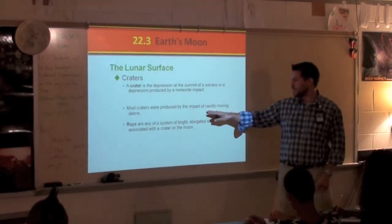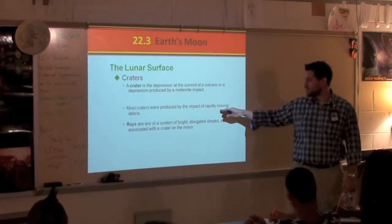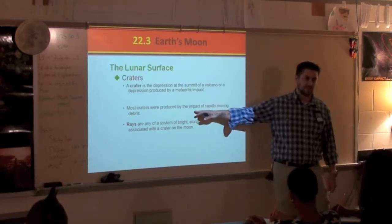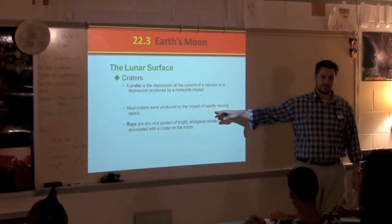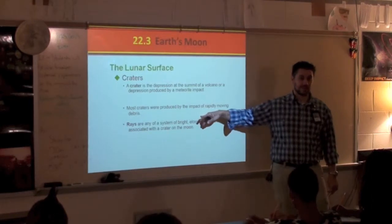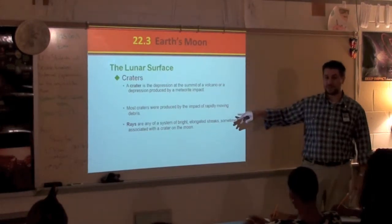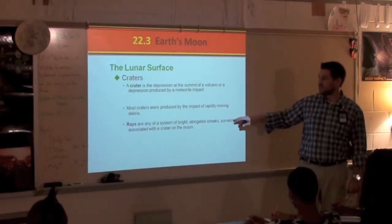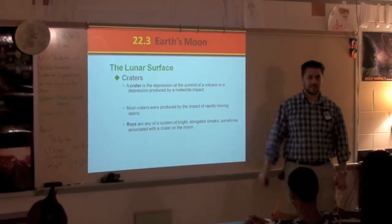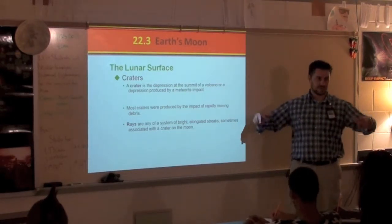Most craters are produced by the impact of rapidly moving debris. What do we call it when it's still moving in our atmosphere? A meteor. You need to know the difference between meteoroid, meteor, and meteorite. A crater is simply a giant depression in the ground where something hit.